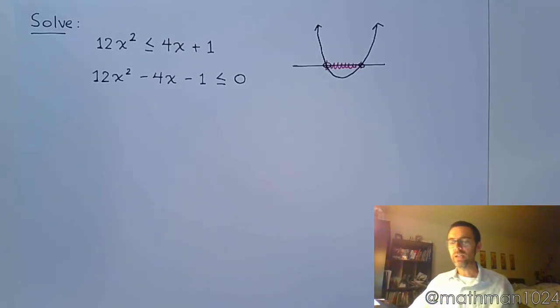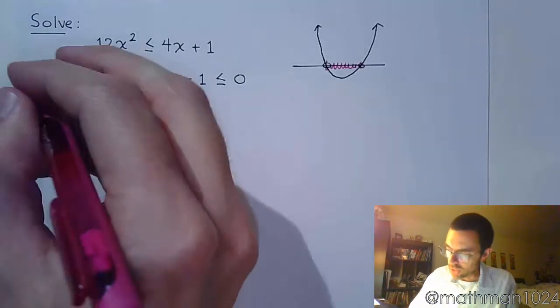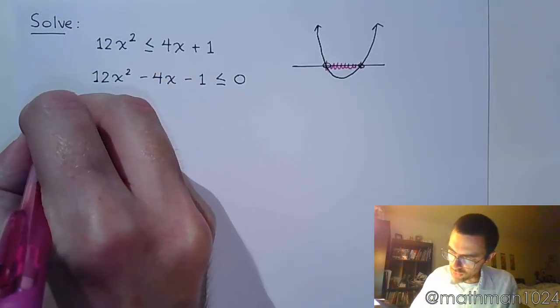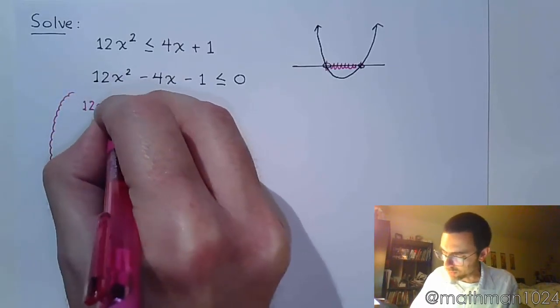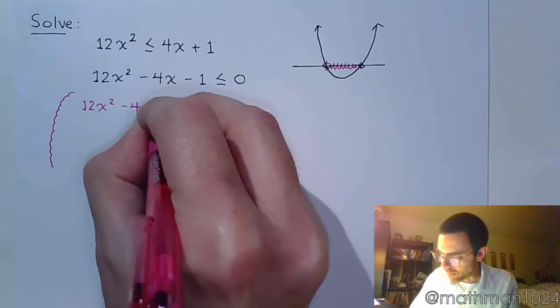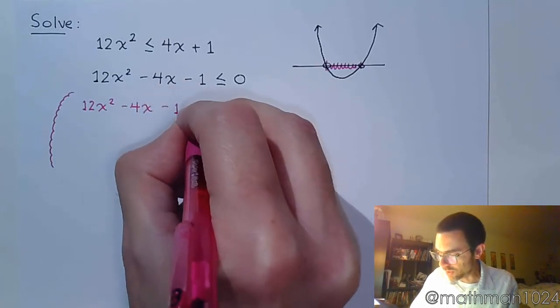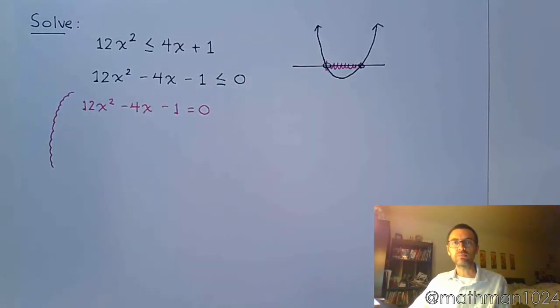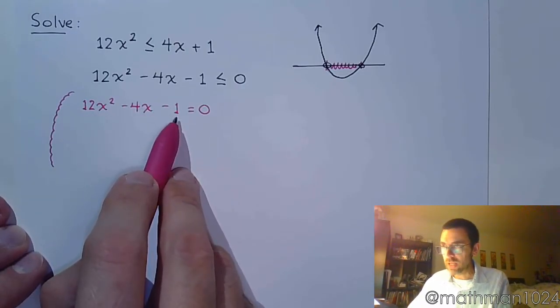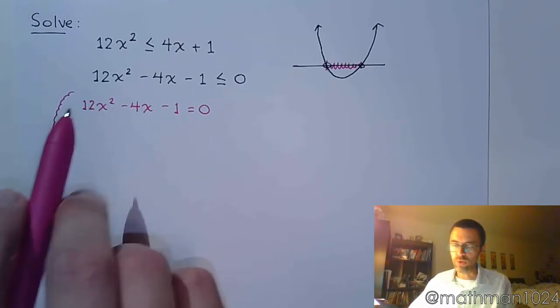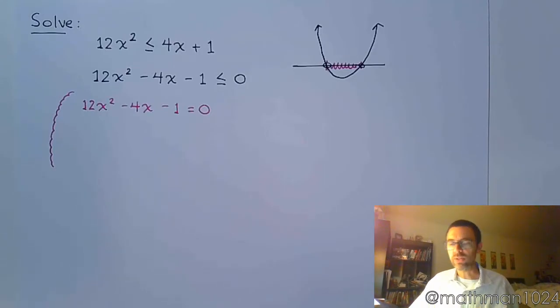Now to correctly and accurately find those critical values, we want to rewrite this as an equation. So you rewrite this as 12x² - 4x - 1 = 0 and you solve that quadratic equation. So let's see if we can factor. If we can factor, things should be pretty simple. So 12 times 1 is 12 and are there factors of 12 that subtract to 4? Well yeah, the answer would be 2 and 6.